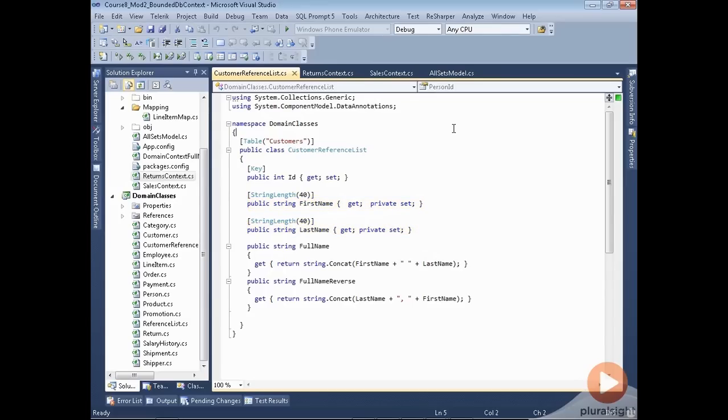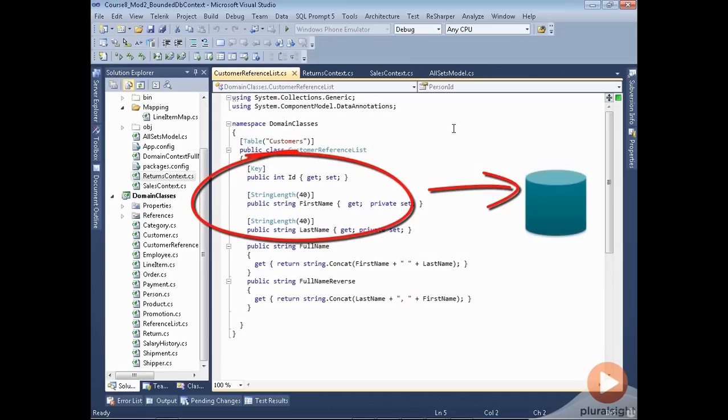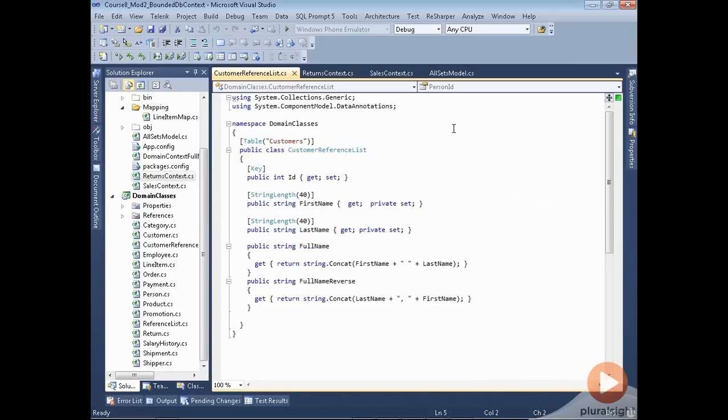For those of you who are not that familiar with code first and conventions for code first, I do want to point out that the full name and full name reverse fields in this class are defined in a way that they don't map back to the database. Person ID, first name, and last name are properties that are involved in a query and mapped to something in the database, but full name and full name reverse are simply logic of the class. They have nothing to do with the database. They'll use whatever first name and last name they found to return that data to the client.